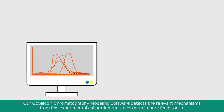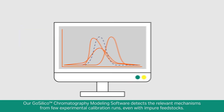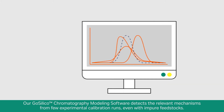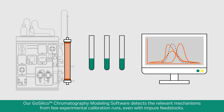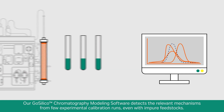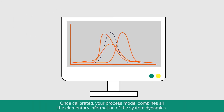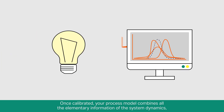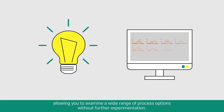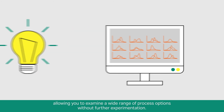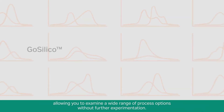Our GoSilico chromatography modeling software detects the relevant mechanisms from few experimental calibration runs, even within pure feedstocks. Once calibrated, your process model combines all the elementary information of the system dynamics, allowing you to examine a wide range of process options without further experimentation.